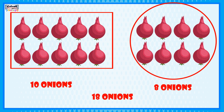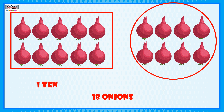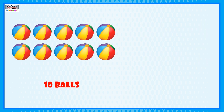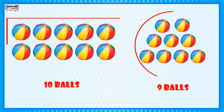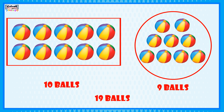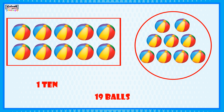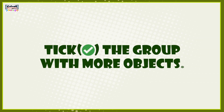10 onions plus 8 onions is equal to 18 onions. So we have 1 ten and 8 ones. 10 volts plus 9 volts is equal to 19 volts. So we have 1 ten and 9 ones. Tick the group with more objects.